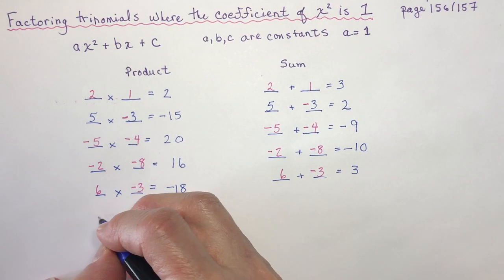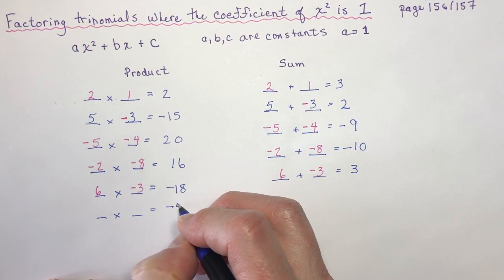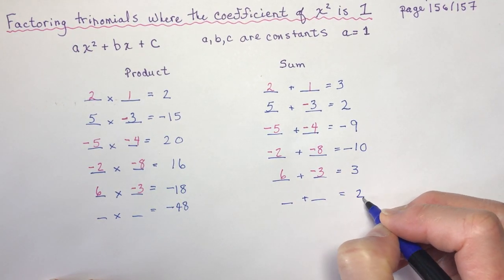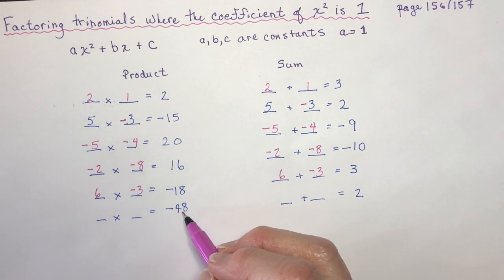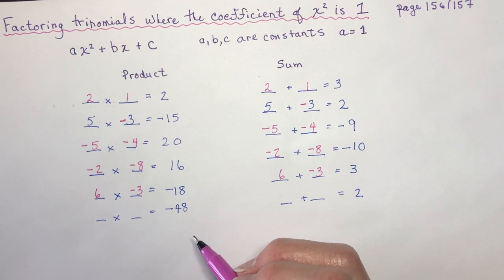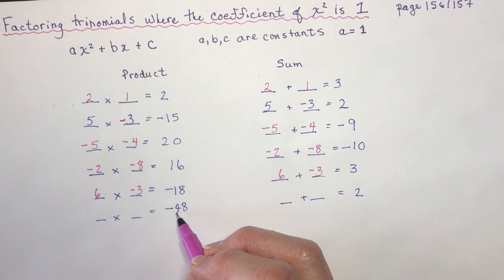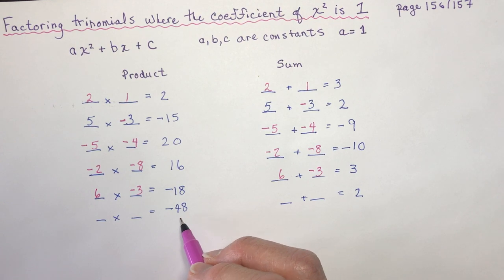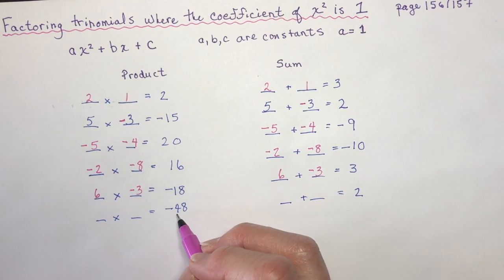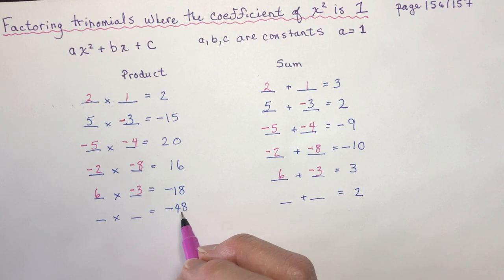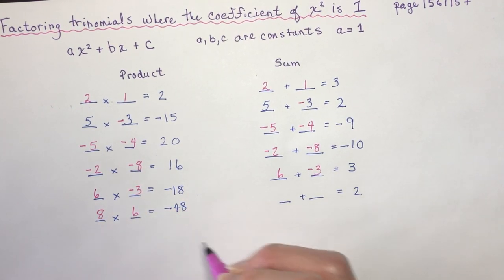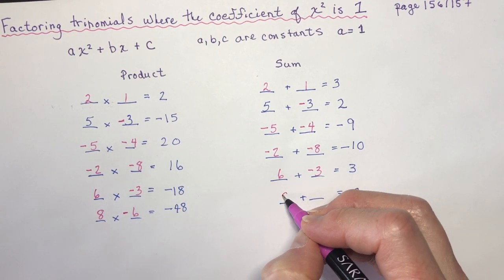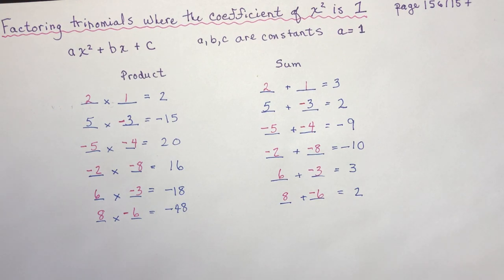What multiplies to negative 48 and adds to positive 2? Think of all the factors of 48: 1 and 48, 2 and 24, 3 and 16 — none of those make 2. How about 8 and 6? 6 times 8 is 48. The sum has to be positive, so the larger number has to be positive: 8 and negative 6.